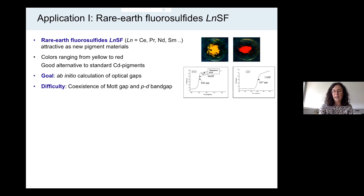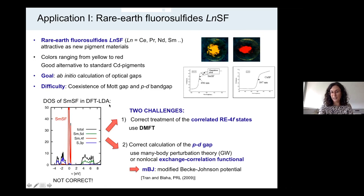The challenge is twofold, because in these materials we don't only have strongly correlated rare earth 4f states, which lead to the formation of a Mott gap, but at the same time we also have a PD band gap which is also not well described in DFT. If you do a standard DFT calculation in the local density approximation, for samarium fluorosulfide you get a pronounced very sharp samarium 4f peak at the Fermi energy, which is clearly not correct because these materials are not metals.